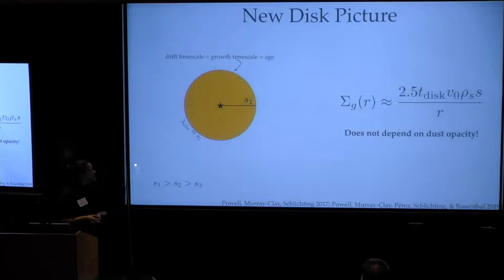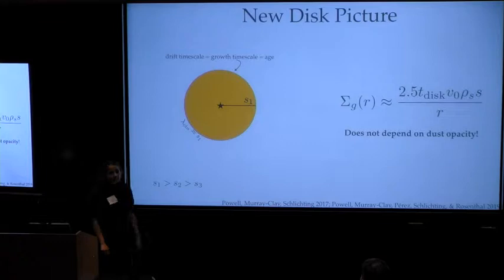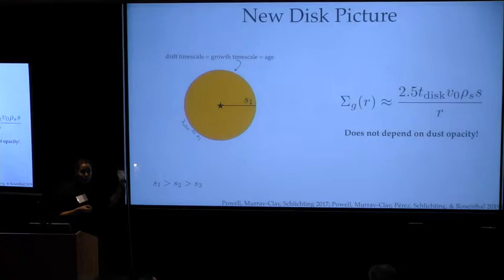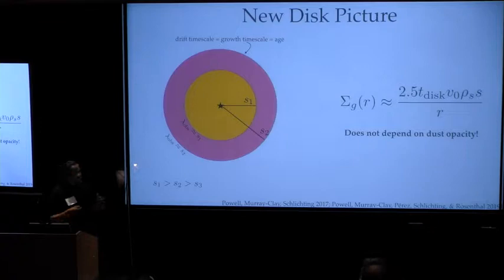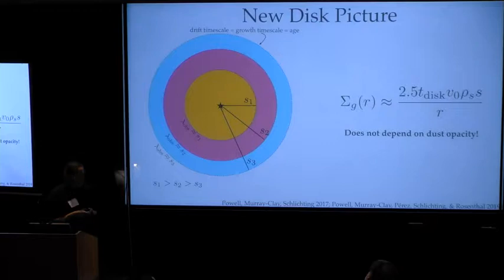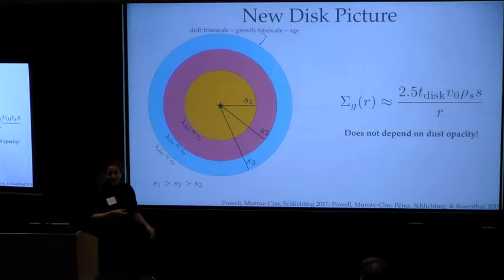So in this new picture of disks, large particles of size S1 should be present throughout the disk until you reach a radius where their growth timescale is equal to their drift timescale, which is also equal to the age of the system. If you pointed a telescope at this disk at observing wavelength roughly equal to S1, you should see a disk of this size. When we move to smaller particles of size S2, they should also be present throughout the disk until they reach a radius where their timescales are equal and the disk would appear radially larger at this wavelength. I'd like to point out that this method of deriving total surface density does not depend on a dust opacity.